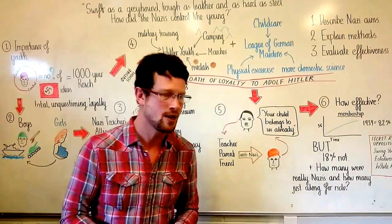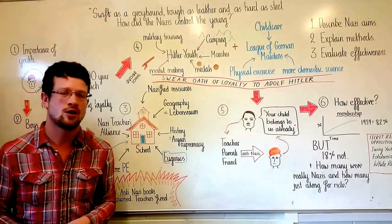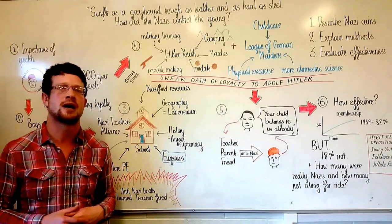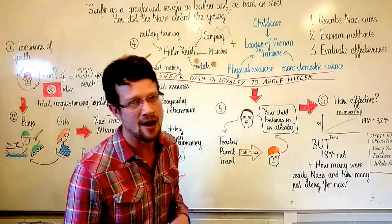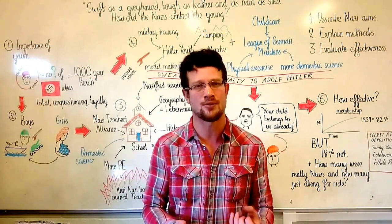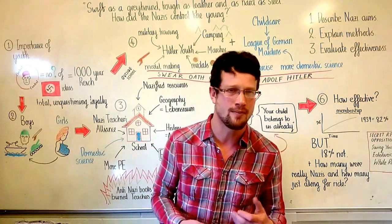Girls had a specified different curriculum. For them, they would also learn domestic science, the science of how to raise a healthy family, and also eugenics, otherwise known as race studies. In these sinister lessons, girls would be taught about the importance of selecting an Aryan to have babies with to ensure that the Aryan blood became stronger and was not polluted by other races.